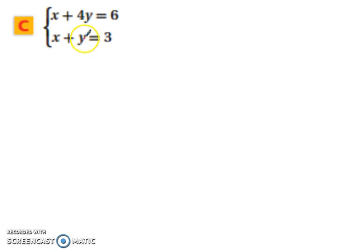Keep in mind, you only need one of the variables in one of the equations by itself. Alright, so let's look at the top one. We're going to get the x by itself. We have x plus 4y equals 6.